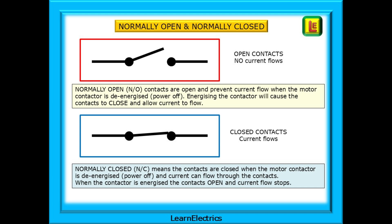Normally closed, or NC, means that the contacts are closed when the motor contactor is de-energised or powered off, and current can flow through the contacts. When the contactor is energised, when voltage is applied to the contactor, the contacts will open and current flow stops.